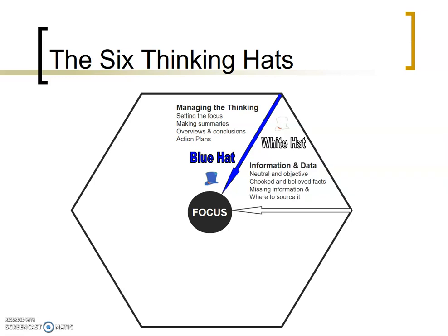The white hat, like white computer printout paper, asks: what are the facts, what do we know? How much would it cost in terms of electricity? How many more products would we be producing? How much more staff would we require? How many shifts would be needed, how many more managers, how much more packaging? Some information we'll know, and some we'll need to find out about. So in white hat mode we're identifying what we know and what we don't know.